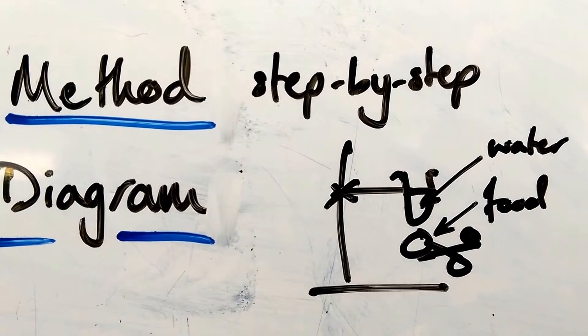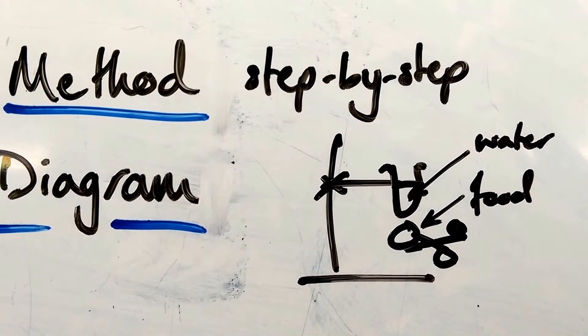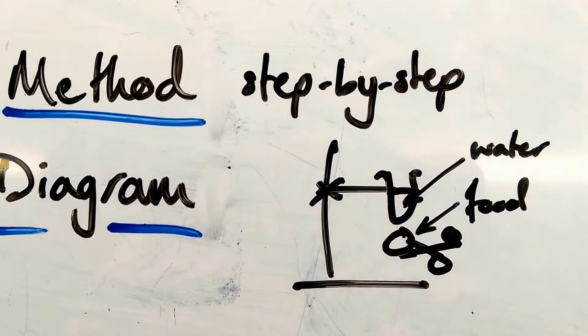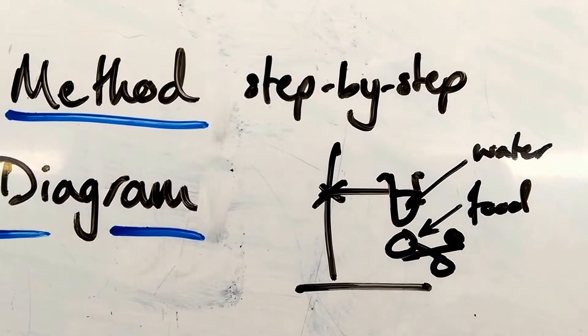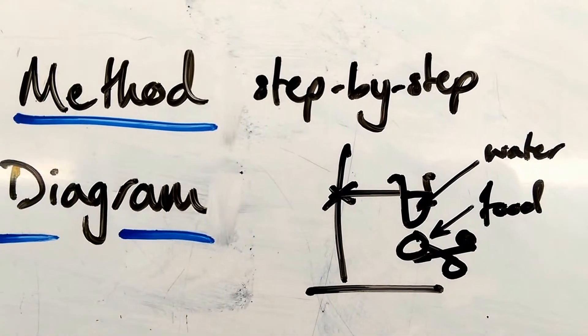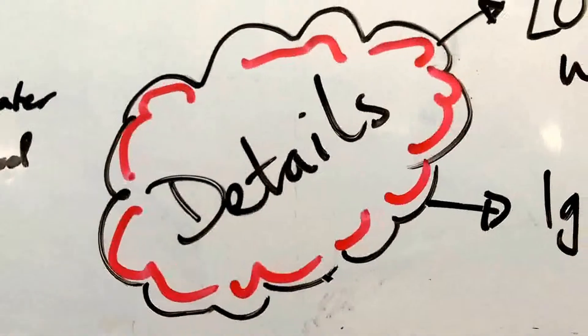And a diagram. Nice and simple. This time, all I've got is a clamp stand, a clamp, and a boiling tube with water, and some tongs with some food that I'm going to burn.